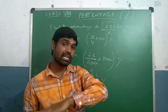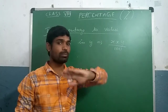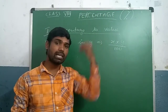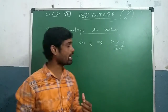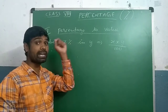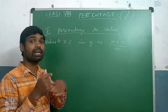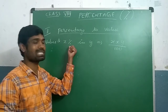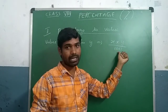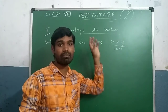Now let us find percentage to value. Previously we found the percentage from a given value. But if the percentage is given, we should find the value. The formula is: value of x percentage in y equals x into y by 100. Here we remove the percentage symbol because we are finding the value.